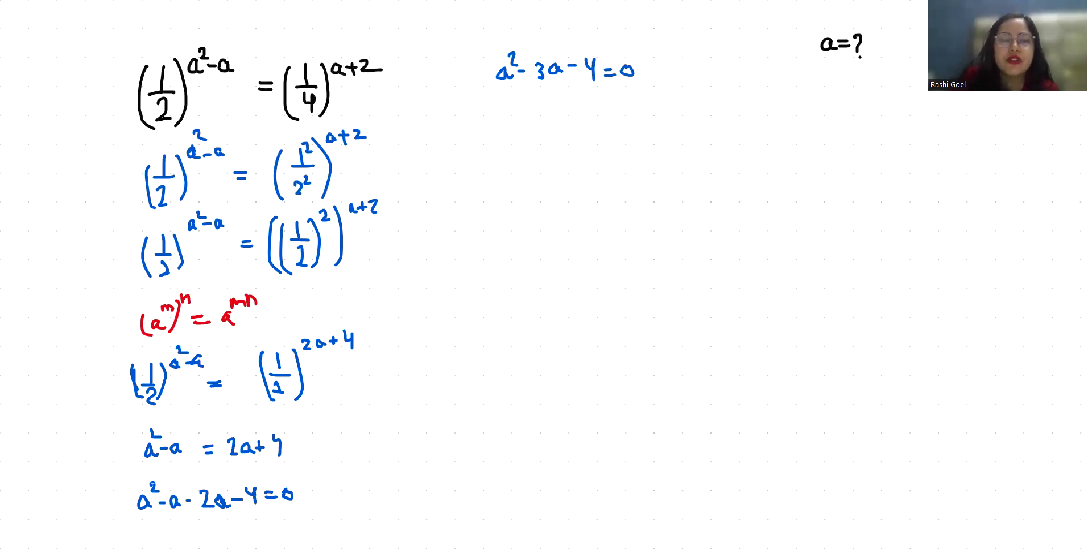We can solve it with quadratic formula or middle term split method. So I can write this -3a as -4a+a-4 = 0. So if I'll take a as common from first two terms, it becomes a(a-4). And if I'll take 1 as common from next two terms, (a-4) = 0.